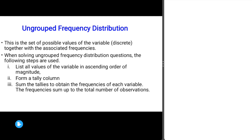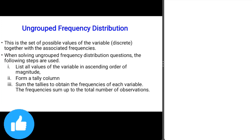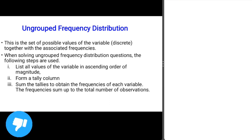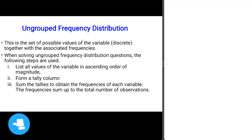To construct an ungrouped frequency distribution, these are the steps we need to go through. Step one: list all the values of the variable in ascending order of magnitude — that is, from the least to the highest, taking into account all the data in the dataset.